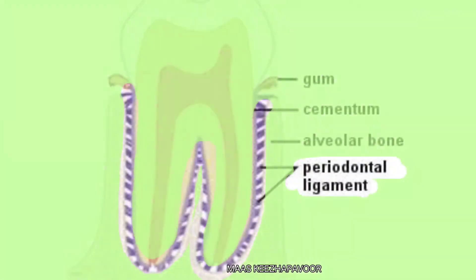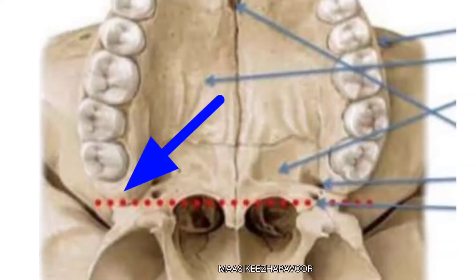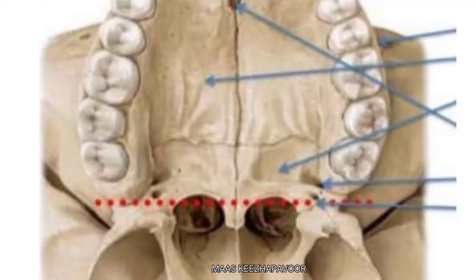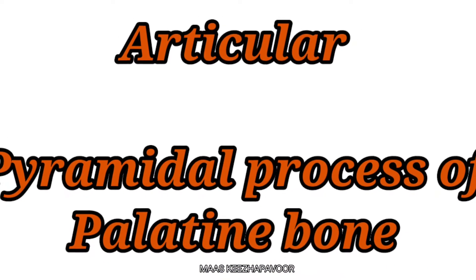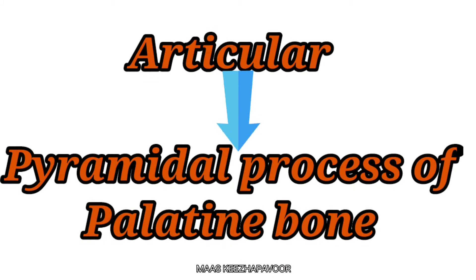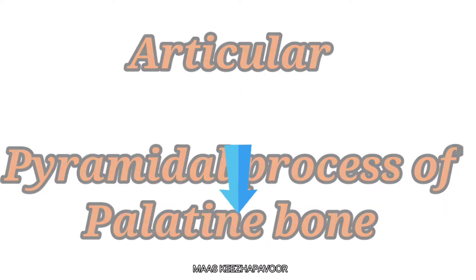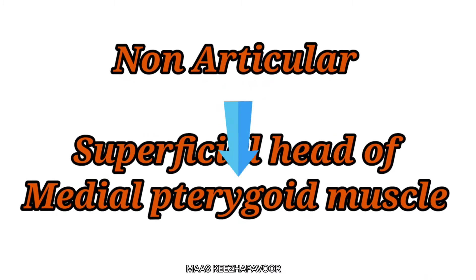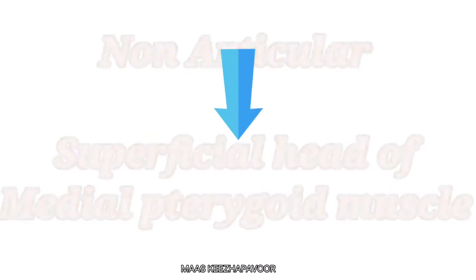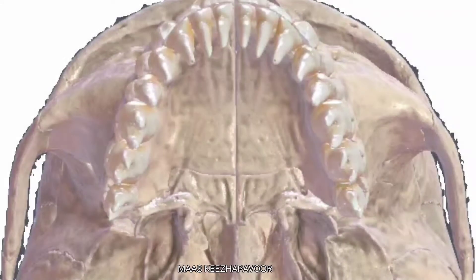This type of joint is a Gomphosis. Just behind the third molar, the maxillary tuberosity is seen. This tuberosity has articular and non-articular parts. The articular part articulates with the pyramidal process of the palatine bone, and the non-articular part gives origin to the superficial head of the medial pterygoid muscle. The hard palate lies within the alveolar arch.